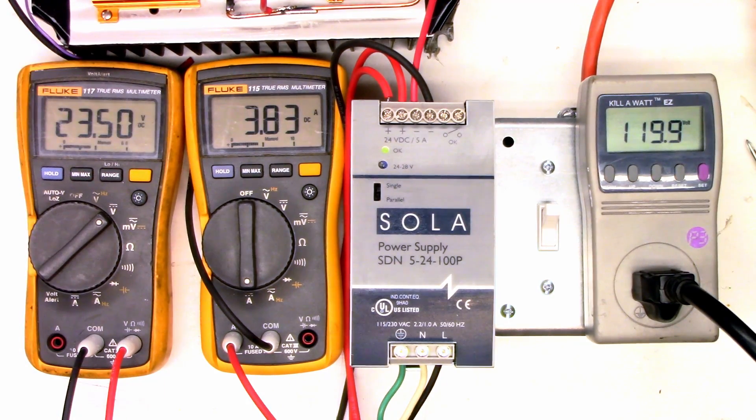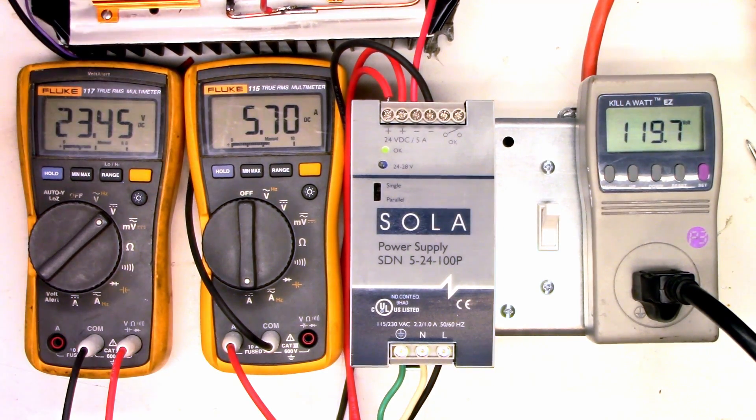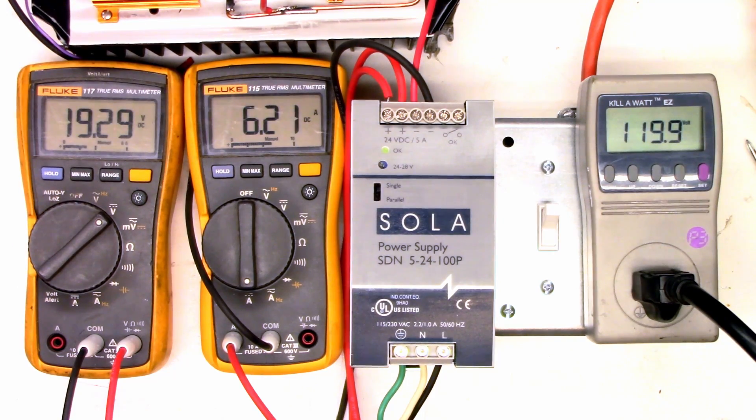The next one, 3.8 amps, 23.5 volts. The next one, 5.7 amps, 23.45 volts. And then the last one, 6.2 amps, but it dipped the voltage down to 19.2, so it's over the rated current handling of this power supply.